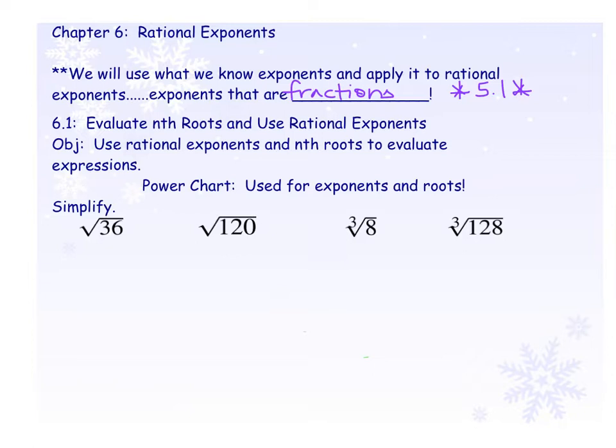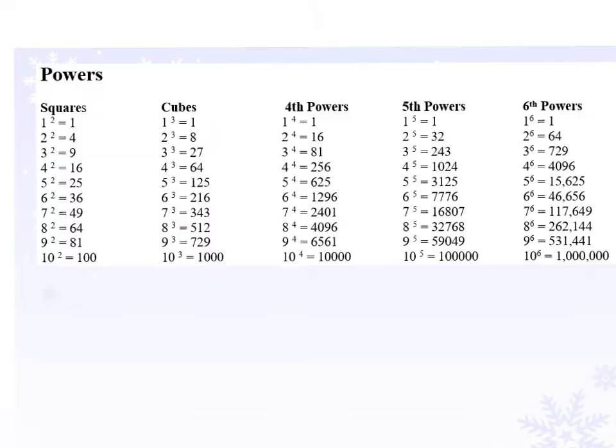In lesson 6.1, we'll evaluate nth roots and use rational exponents. We're going to do a lot of work with that little sheet of paper known as the power chart. You can use the power chart for both exponents and roots or radicals. Here are a list of the 10 perfect squares, cubes, 4th, 5th, and 6th powers. This chart could go on and on forever, but these will be the numbers most commonly used with powers and roots.